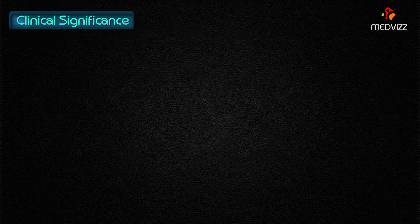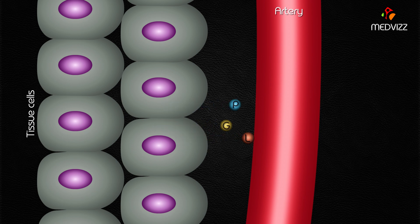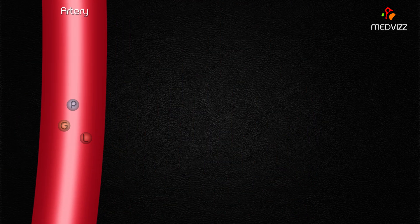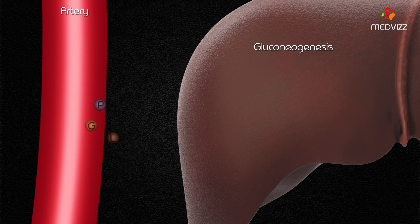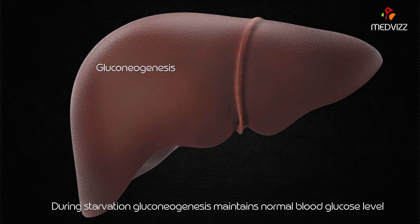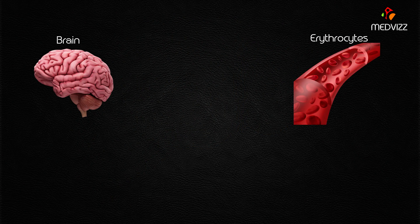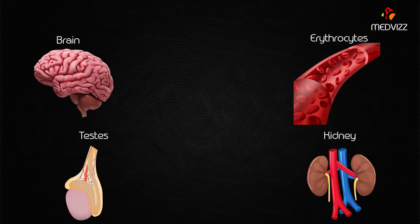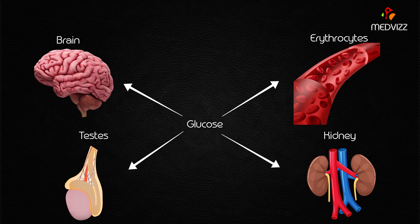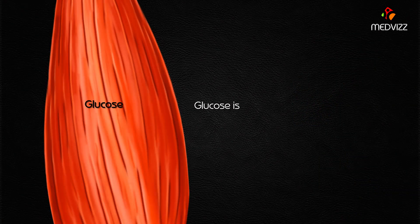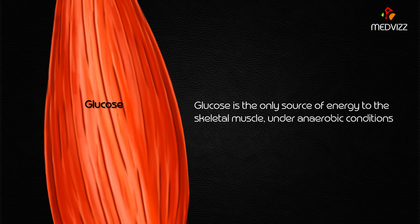What is the clinical significance of gluconeogenesis? Certain metabolites produced in tissues — such as lactate, glycerol, and propionate — accumulate in the blood, and gluconeogenesis effectively clears these products. During starvation, gluconeogenesis maintains normal blood glucose levels by utilizing products produced in the tissues. The liver plays a major role due to the presence of glucose-6-phosphatase. The brain, erythrocytes, testis, and kidney are extremely dependent on glucose — the human brain alone requires 120 grams of glucose per day out of 160 grams needed by the entire body — and glucose is the only energy source for skeletal muscle under anaerobic conditions.